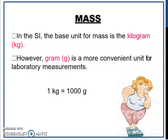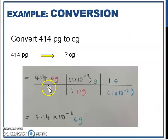In the SI, the base unit for mass is the kilogram kg. However, gram is a more convenient unit for laboratory measurement. 1 kilogram equal to 1000 gram.